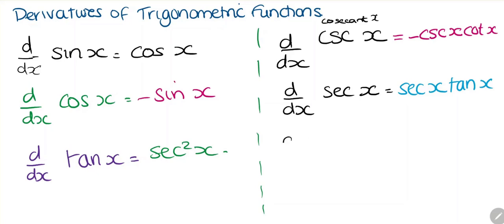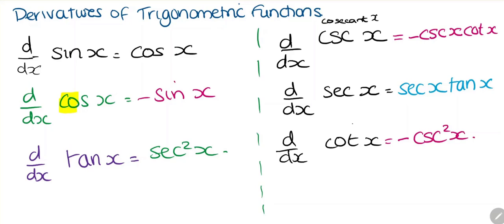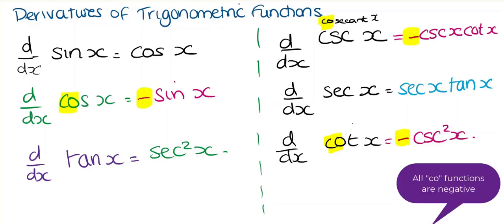Now, d/dx of cotangent of x — this is going to be negative cosecant squared of x. If we look at our functions: cosine, cosecant, cotangent — these are all negative. So this is something we can use to remember: any function that starts with 'co', the derivative is going to be negative.